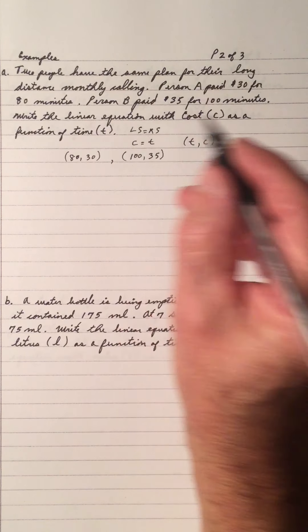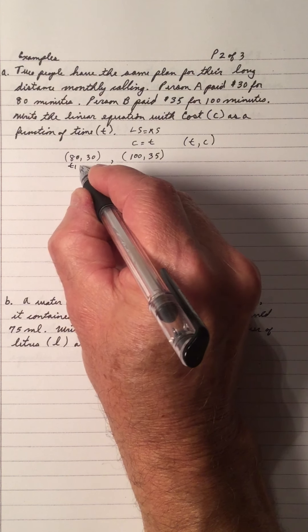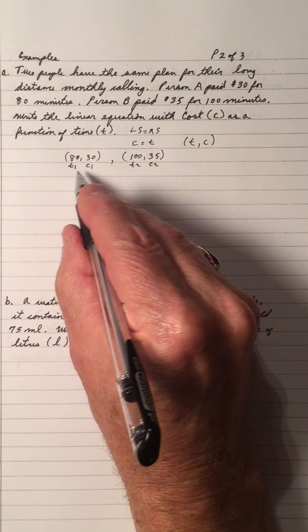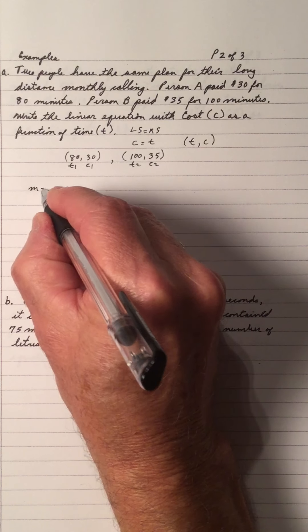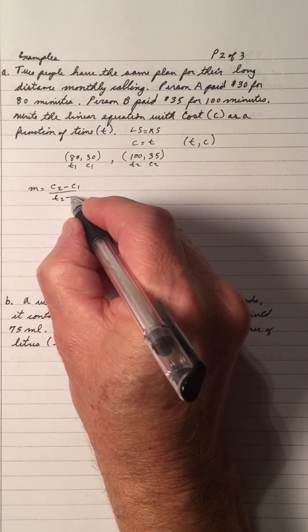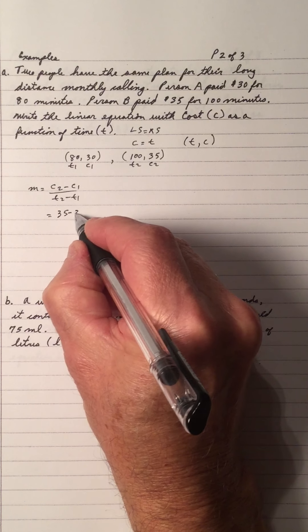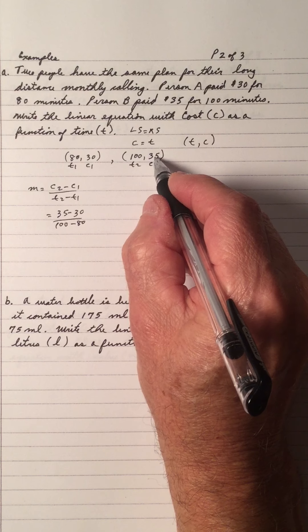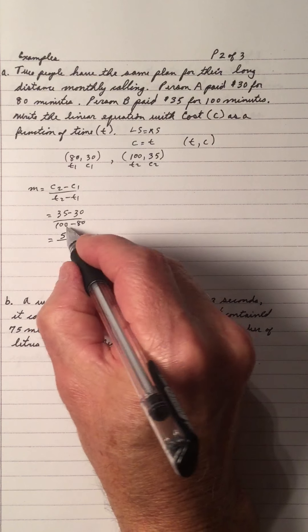So we have a slope formula, but the slope formula here uses time t1 and cost c1, and we have t2 and c2. So instead of x1, y1, x2, y2, we have time and cost. The slope is c2 minus c1 over t2 minus t1. So that gives us 35 minus 30 over 100 minus 80, which is 5 over 20.